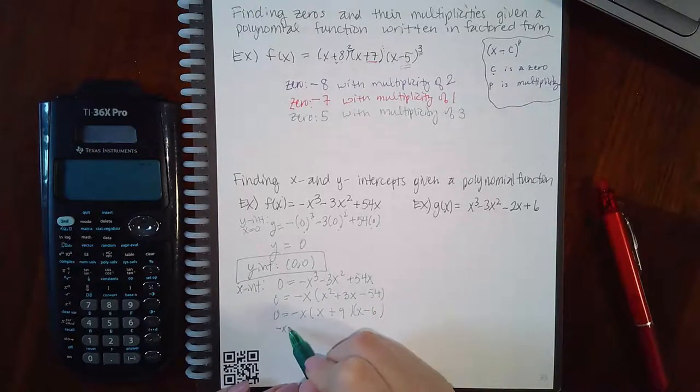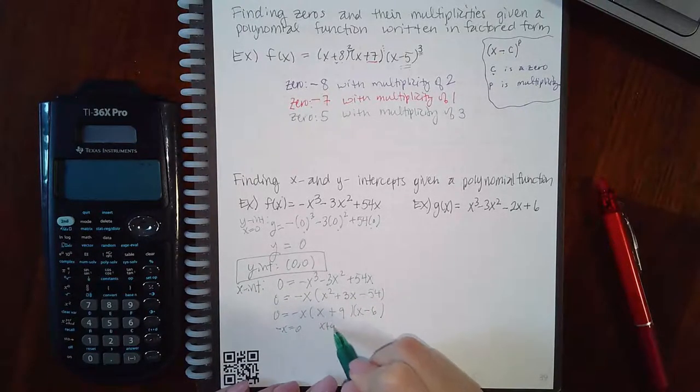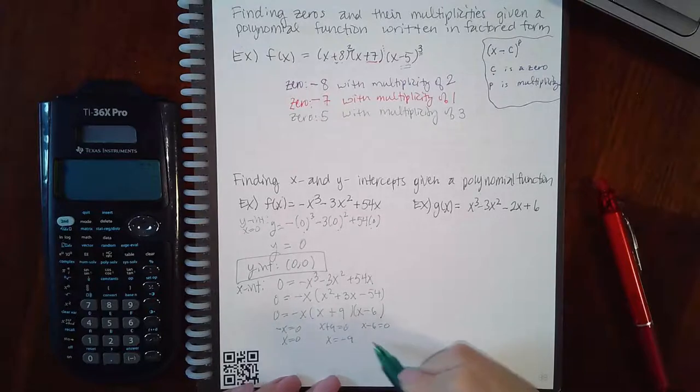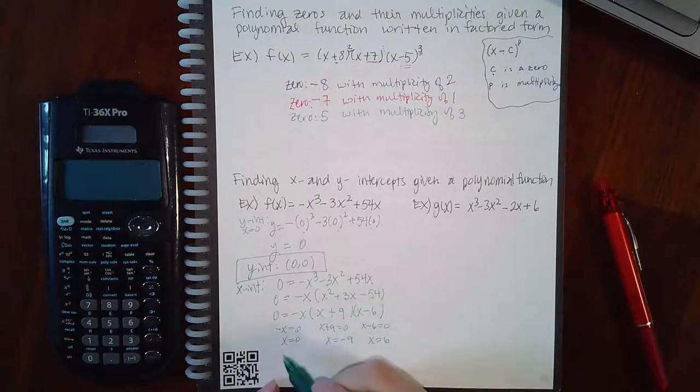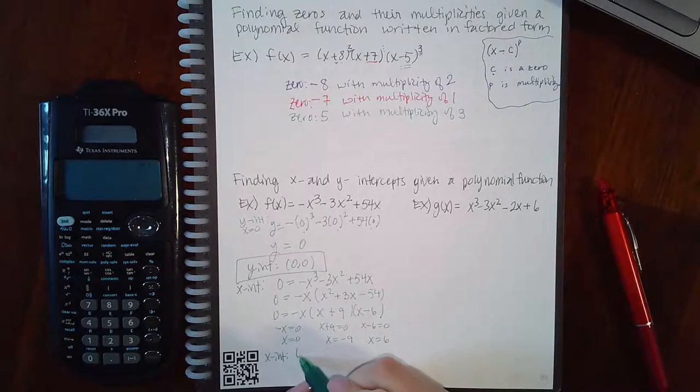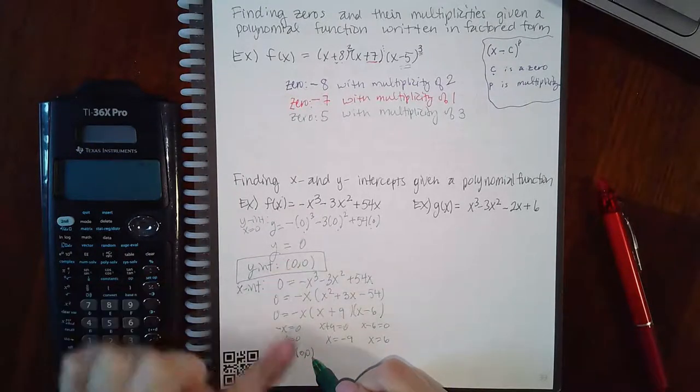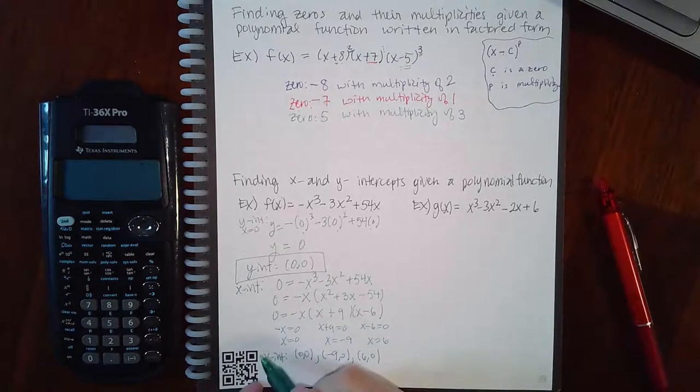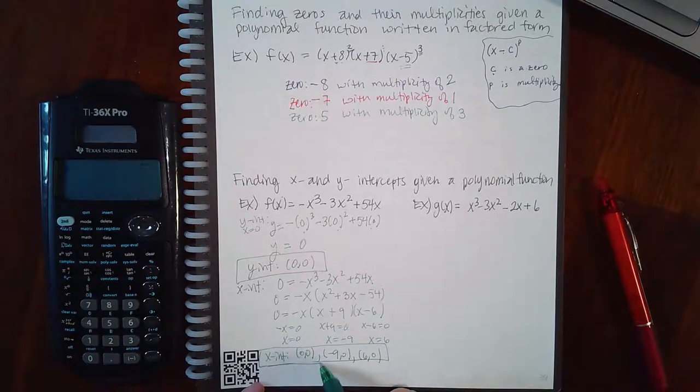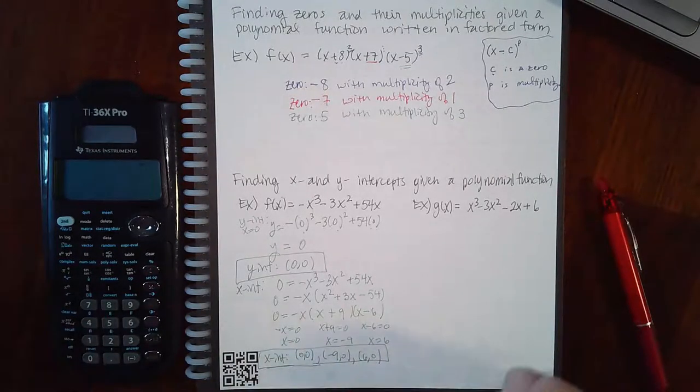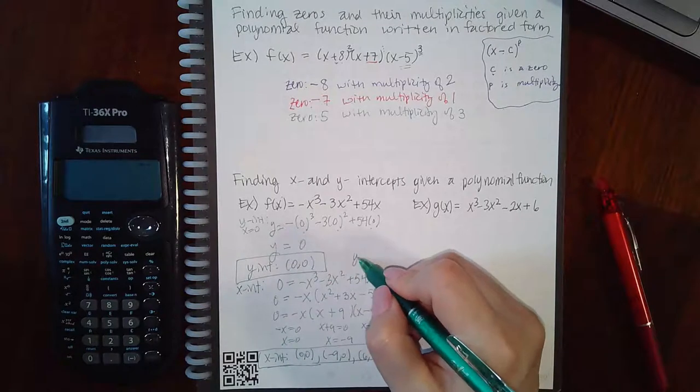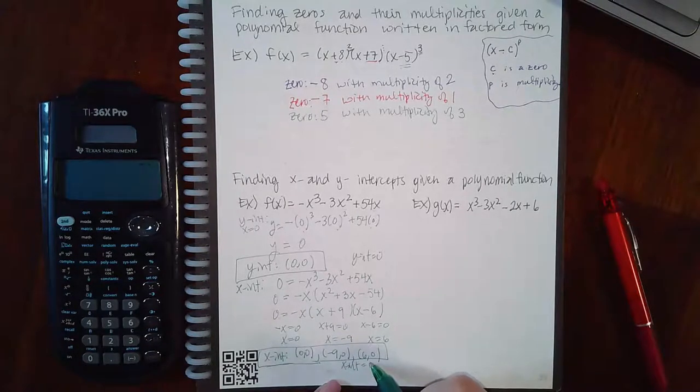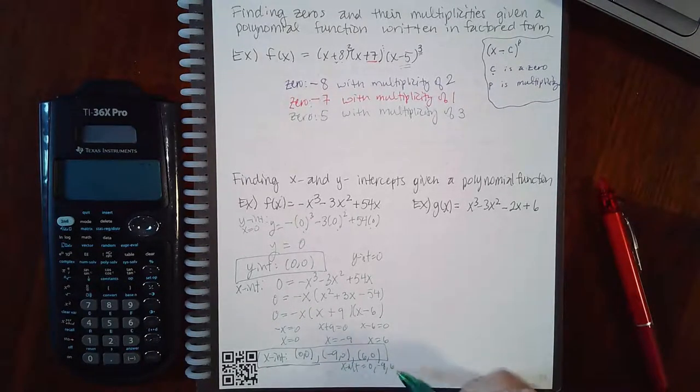And then if I set each factor equal to zero, I get x equal to zero, I get x equal to negative 9, and I get x equal to 6. So my x intercepts for this particular polynomial are 0, 0, which is the same as the y intercept, negative 9, 0, and 6, 0. Now depending on if they want them in point form or if they just want you to list the values, that depends. Sometimes they just want the y intercept equals 0, and here they would want the x intercept equals 0, negative 9, 6, and that sort of thing.